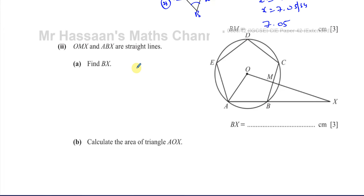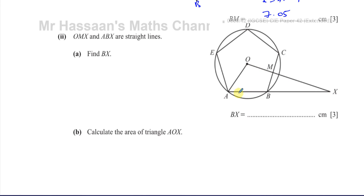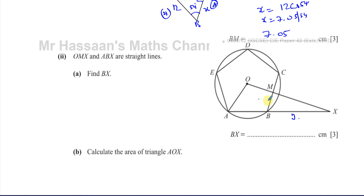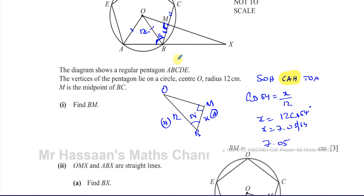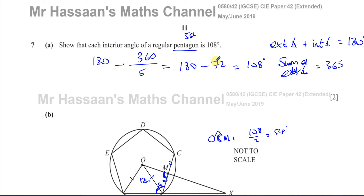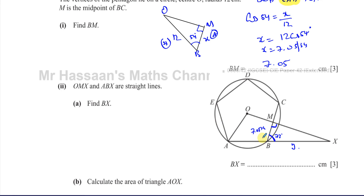Part B(ii) says: OMX and ABX are straight lines. Find the length of BX. We already know BM is 7.0534. We know the angle at M is a right angle, and this angle here is the exterior angle of the regular pentagon, which is 72 degrees — that's 360 over 5. The exterior angle is 72 because the interior angle is 108.